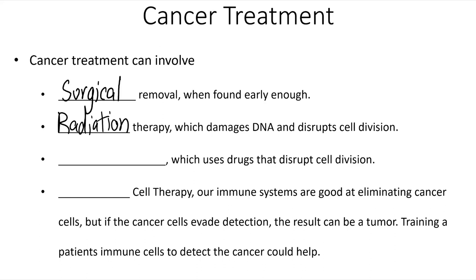Unfortunately there are other types of rapidly dividing cells in our body as well, so radiation therapy can come with a series of side effects. Similar to the next option, which is chemotherapy — the goal of chemotherapy is to use drugs and pharmaceuticals to disrupt cell division, but that often comes with a variety of side effects as well.